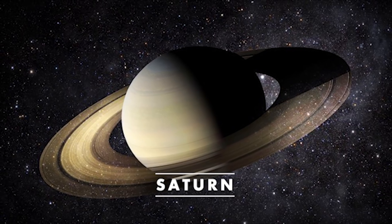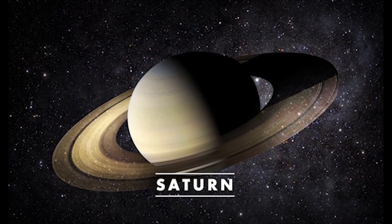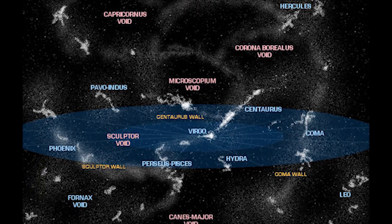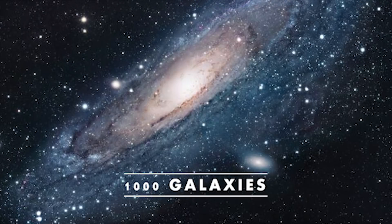Saturn is the only planet in the solar system less dense than water. The Virgo cluster is 15 million light-years away and is made up of 1,000 galaxies.